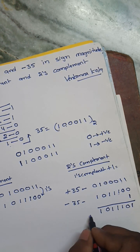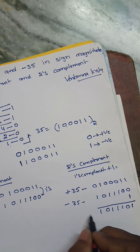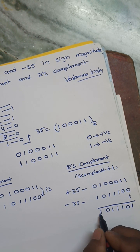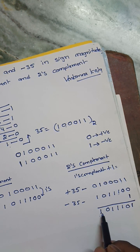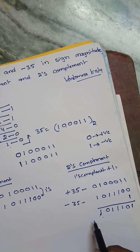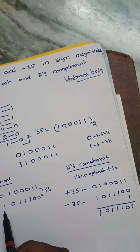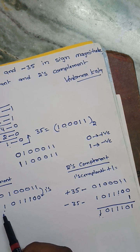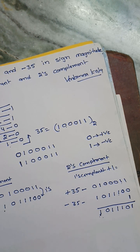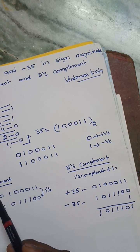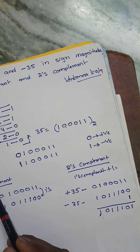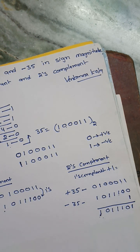So the two's complement of minus 35 is: 1, 0, 1, 1, 1, 0, 1. The leftmost bit here represents the sign. This is the representation of plus 35 and minus 35 in sign-magnitude, one's complement, and two's complement. Thank you.